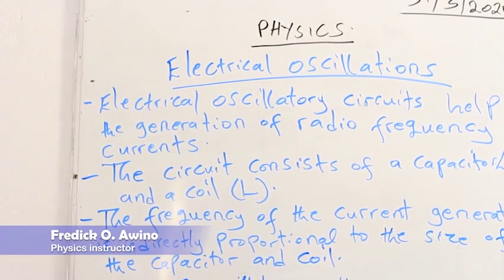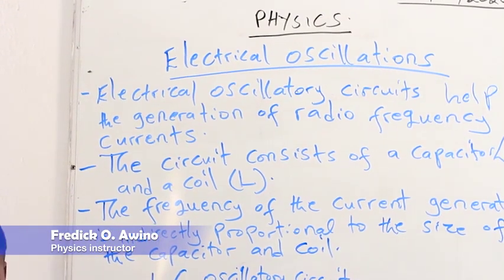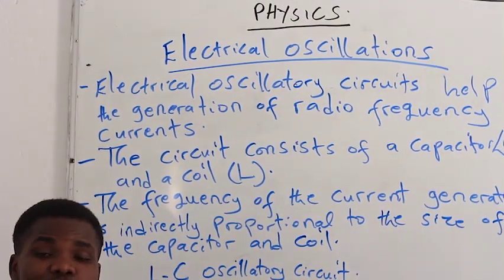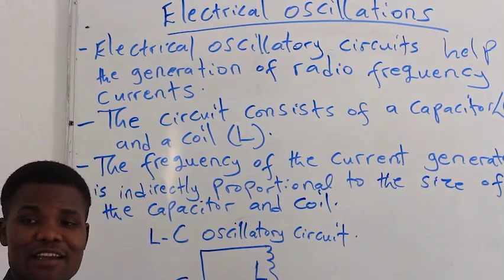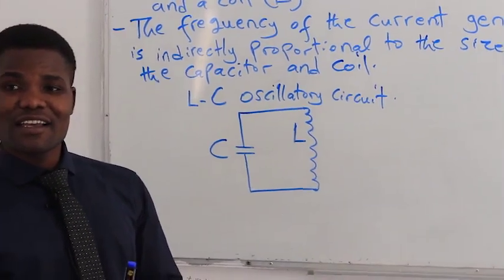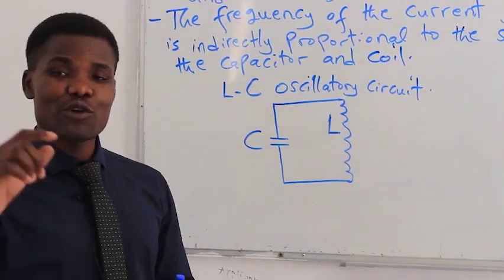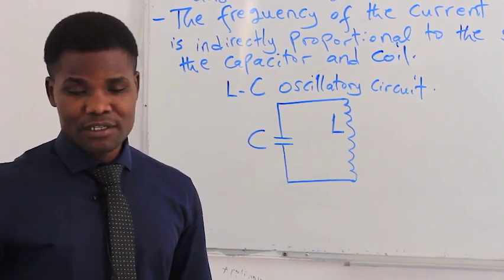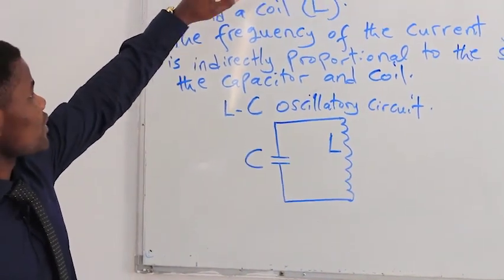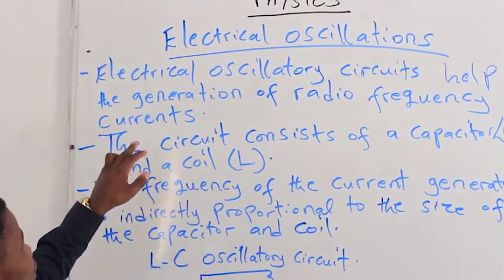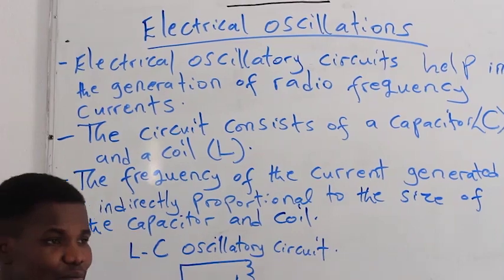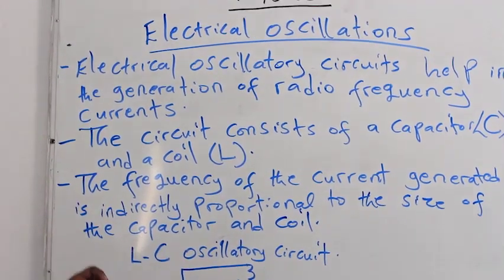We continue with the lesson — we are moving to electrical oscillations. An electrical oscillatory circuit has got an alternating voltage flowing through it. As you know, alternating voltage generates a higher part of the voltage, then a lower part, then higher again, so it oscillates in the form of a sinusoidal wave. This generates radio frequency currents, which also have the form of a sine wave because they are generated from an alternating voltage source.